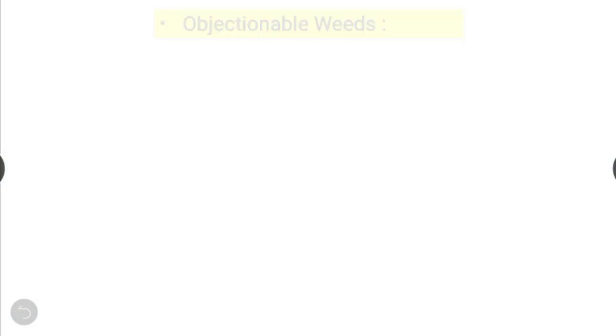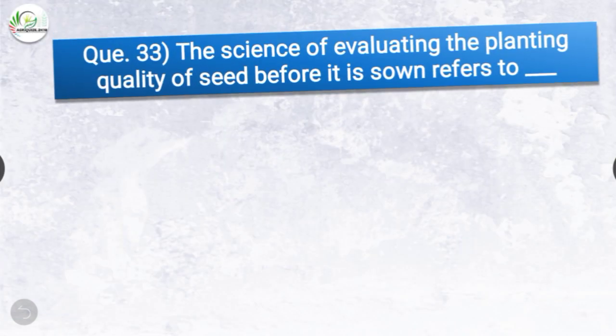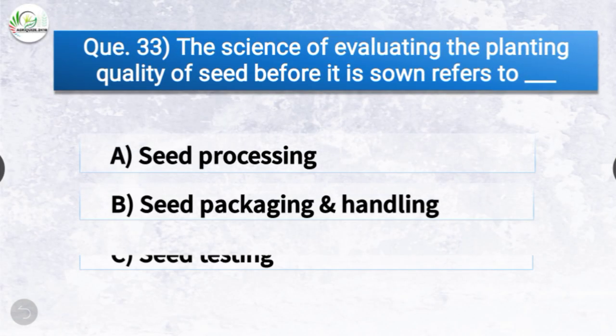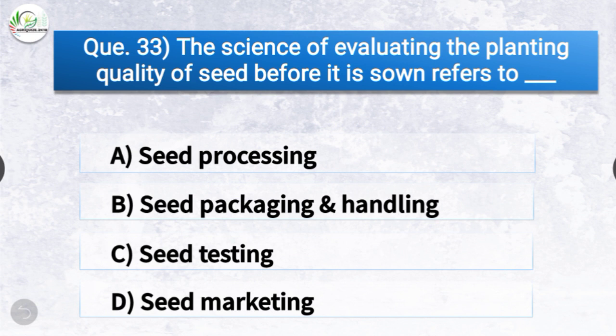Question number thirty-three: The science of evaluating the planting quality of seed before it is sown refers to — the options are seed processing, seed packaging and handling, seed testing, or seed marketing. The correct answer is option C — seed testing. The science of evaluating the planting quality of seed before it is sown is referred to as seed testing.